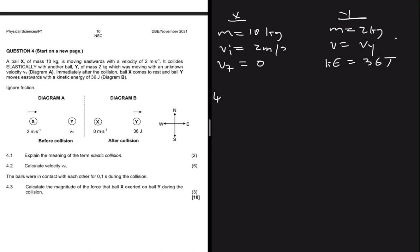Question 4.1 asks: explain the meaning of the term elastic collision. A collision is elastic if the sum of momentum before equals the sum of momentum after, and also the sum of kinetic energy before equals the sum of kinetic energy after. If the kinetic energy is not conserved, the collision is deemed inelastic.